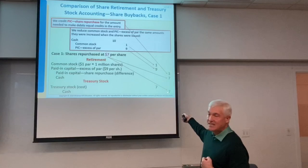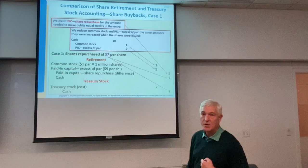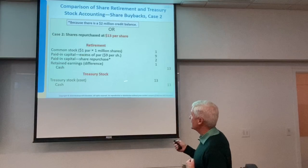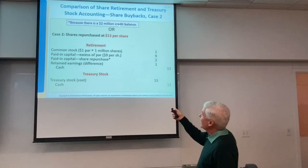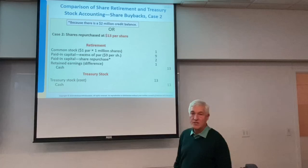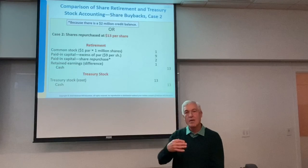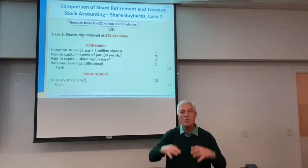We're going to skip the retirement method — I won't hold you accountable for that. For treasury stock: shares repurchased at $13 per share, 1 million shares — debit treasury stock $13 million, credit cash $13 million. That's the easy entry. Whatever you pay in cash, that's the amount you put as a debit into the treasury stock account. Treasury stock is a debit because credits increase equity and debits reduce equity — treasury stock is a reduction in equity and will be a debit balance.